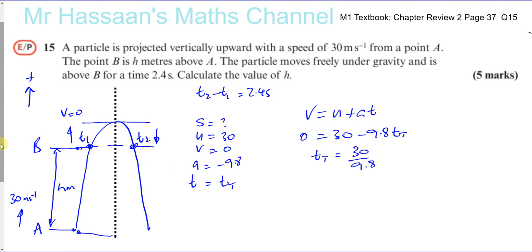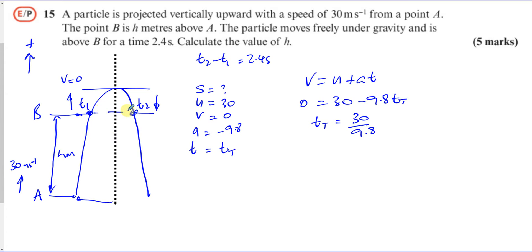So now from that, we can work out what T1 and T2 is, because this is going to be symmetrical. The time it took for it to go from B to the top of the flight will be the same time it took for it to go back down to B from the top of the flight.